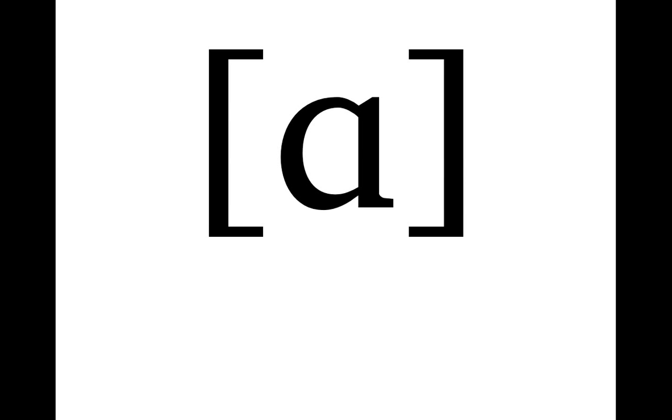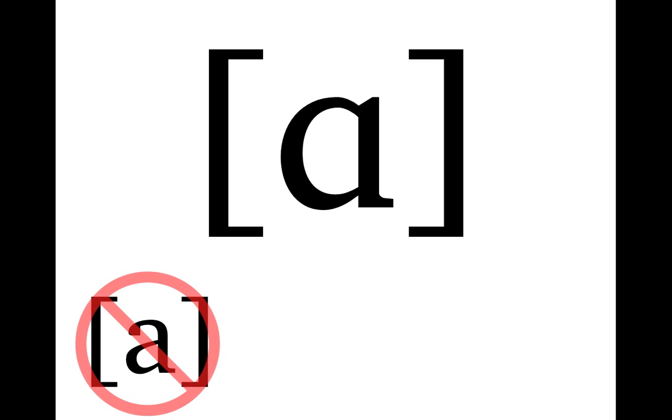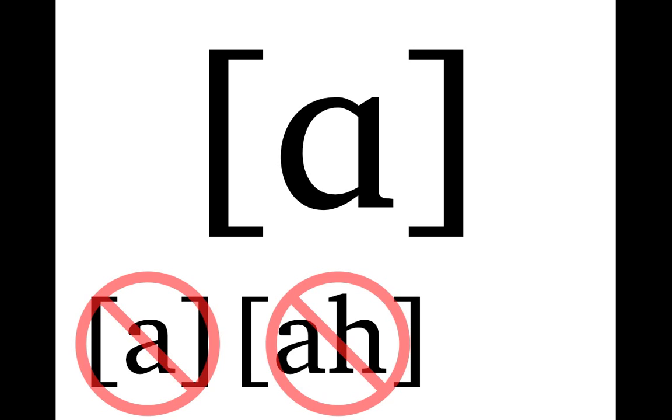It's important that you write them correctly. This is the symbol for AH and it has to be written this way. You can't write it that way. That's wrong. That's the wrong kind of A. You also can't write it that way because that's not even IPA. That's just trying to write out the sound using letters.